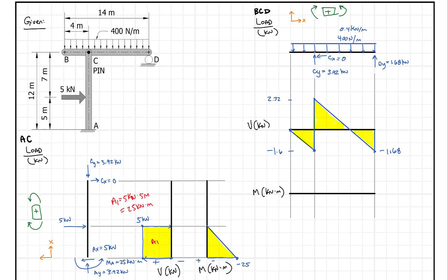Now we move to member BCD and find more areas. I'll call them A2, A3, and A4 since A1 was already used. A2 is a triangle over the first 4 meters: one half times 4 meters times the height of minus 1.6 kilonewtons, which gives minus 3.2 kilonewton-meters.